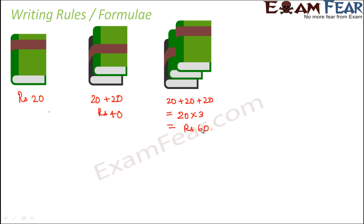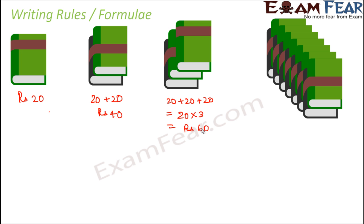Now for one book, two books, three books, four, five, six is also fine. But if I ask you to find out the cost for 625 books — when the numbers become large, you have to add 20 that many times: 20 plus 20 plus 20, continuing that for 625 times. That is not a feasible option.